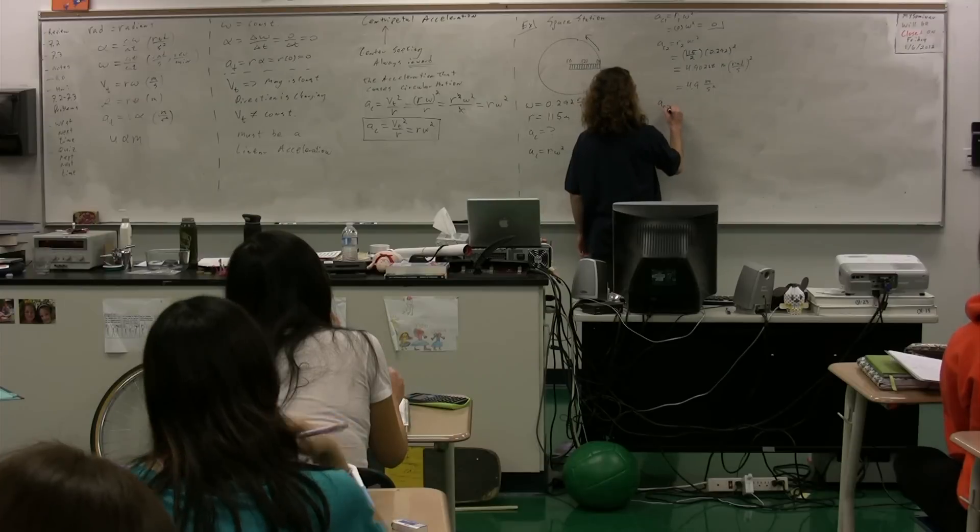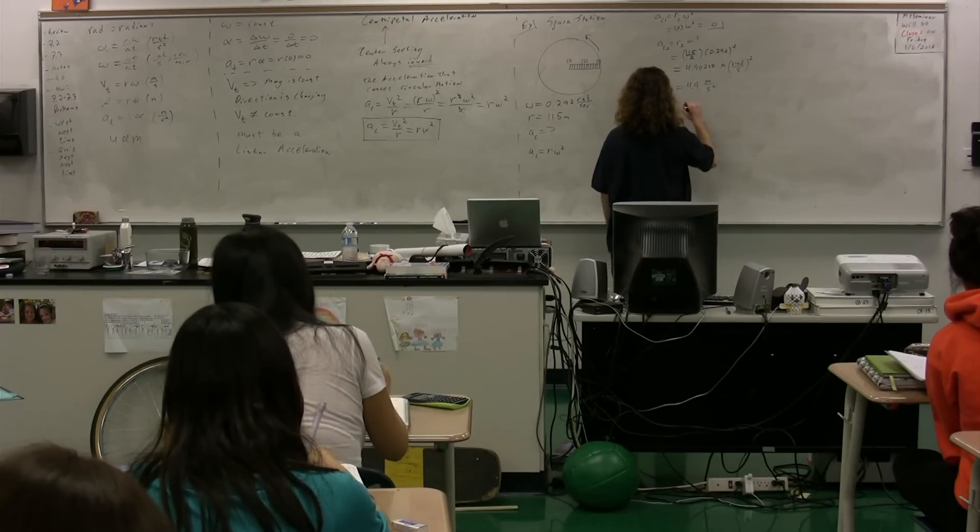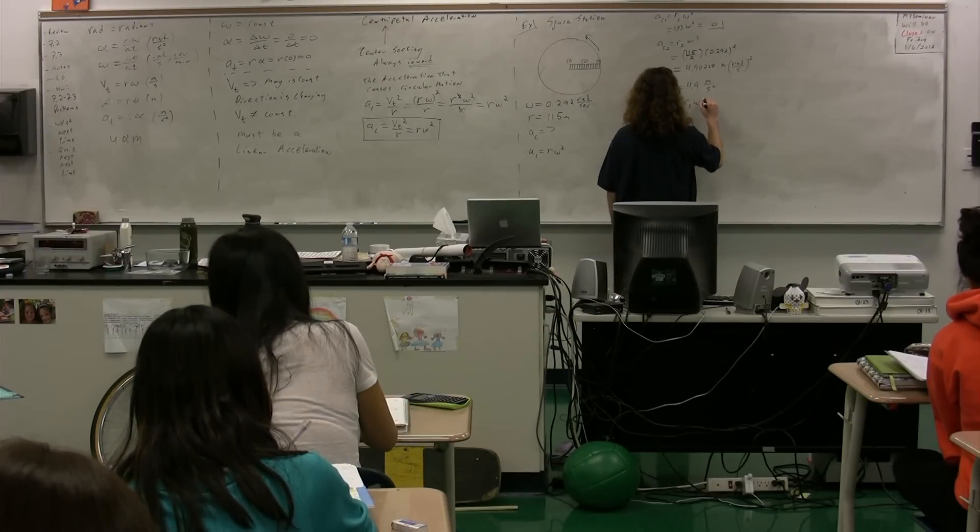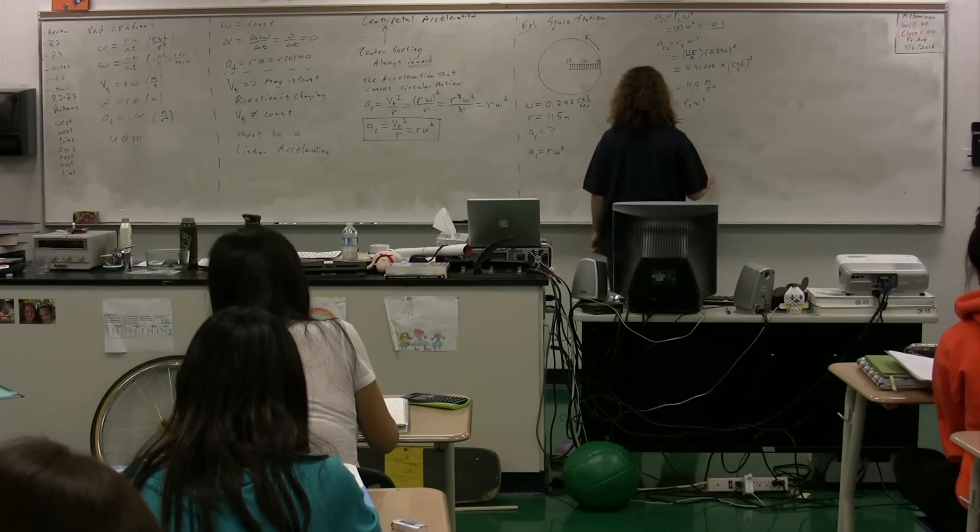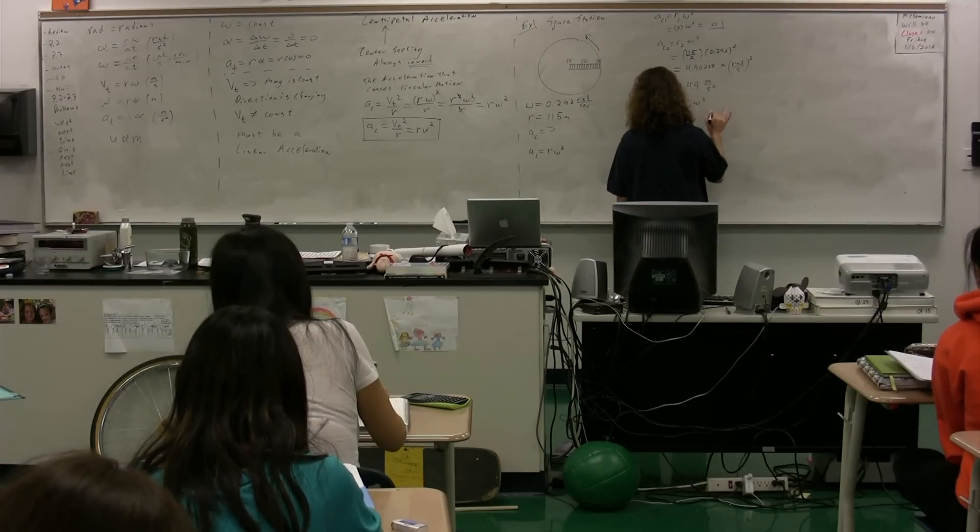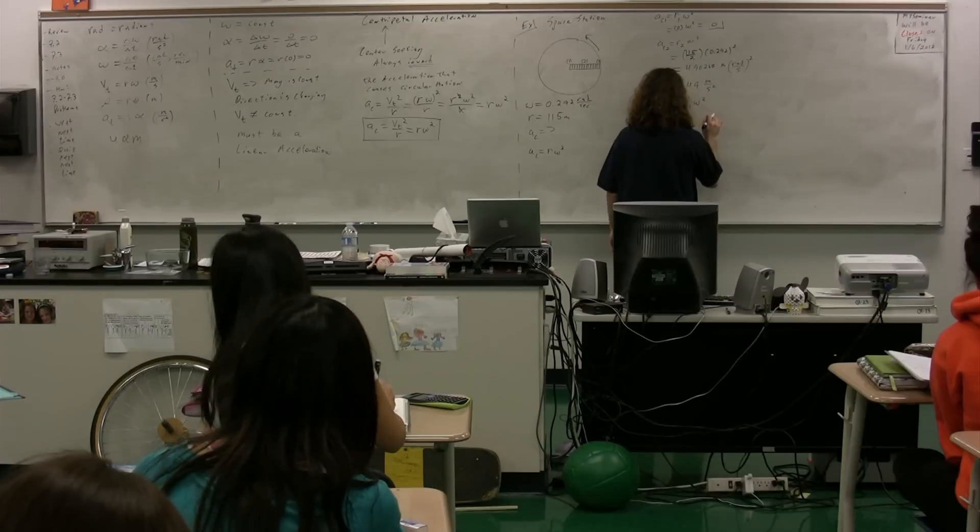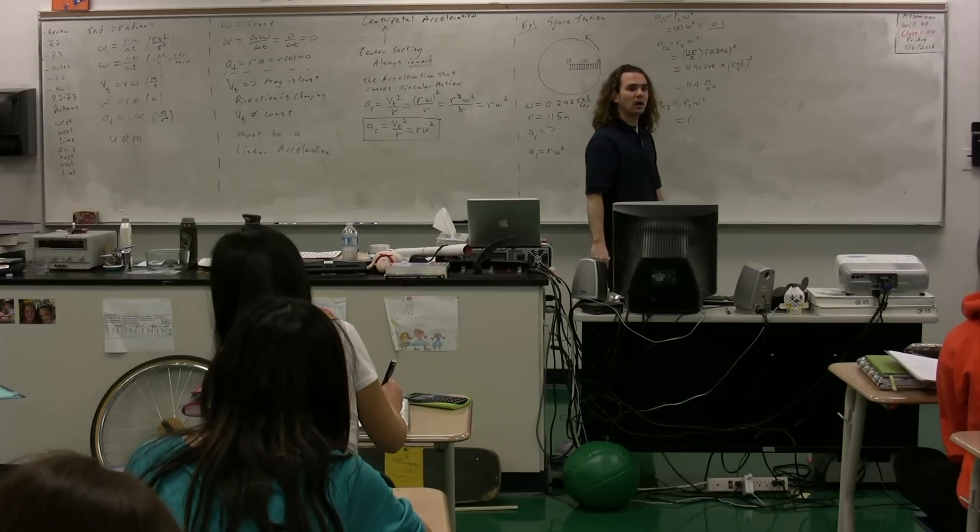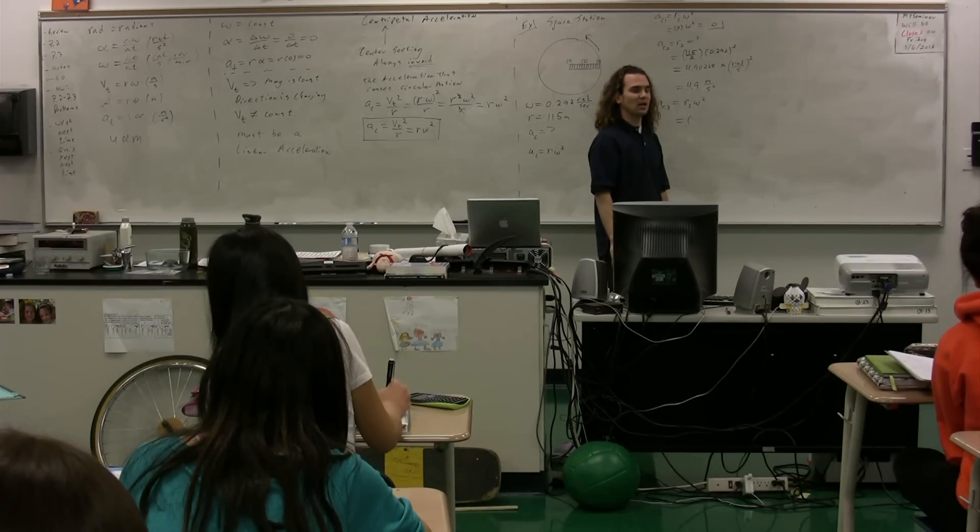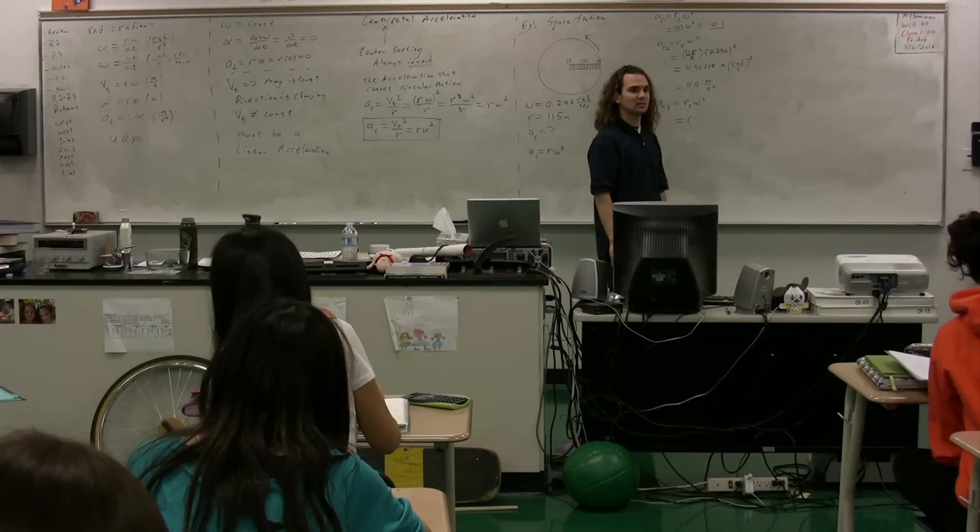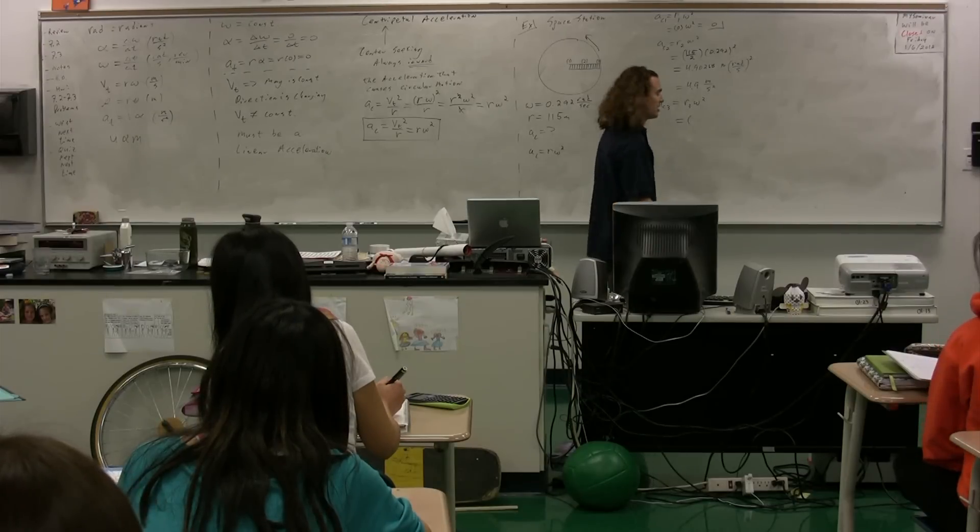We can also figure out the centripetal acceleration at position 3, which is at the base of the ladder. R3 times omega squared. What is radius 3, Thomas? I'm sorry you don't have a calculator. And I'm sorry to hear that you're so calculator dependent. What is r as the radius?